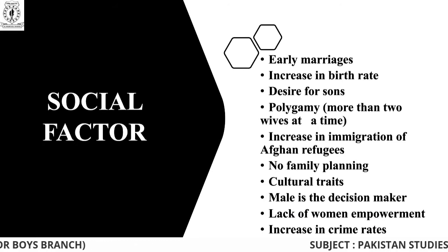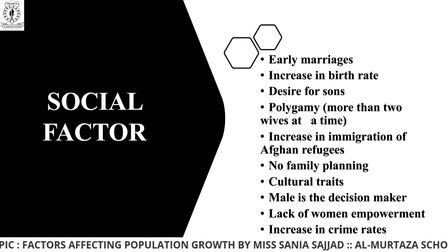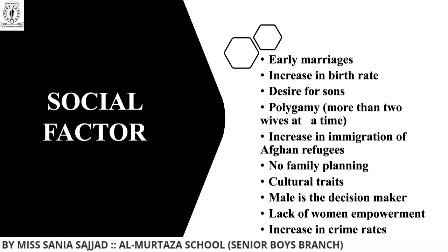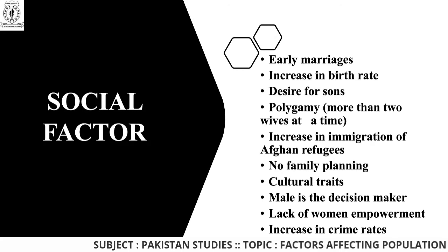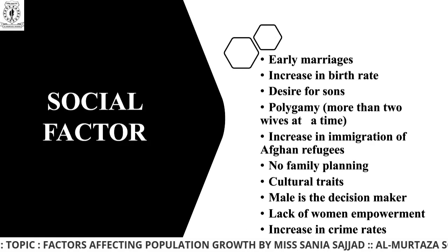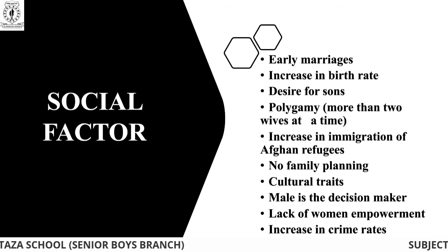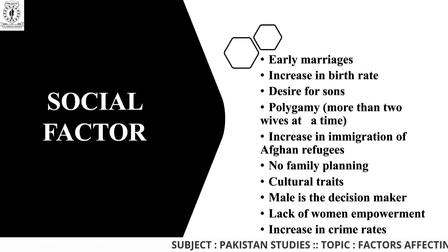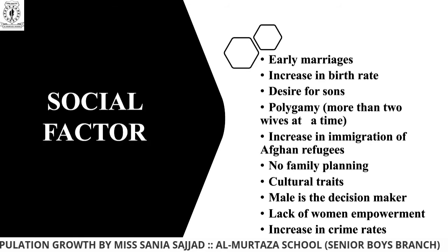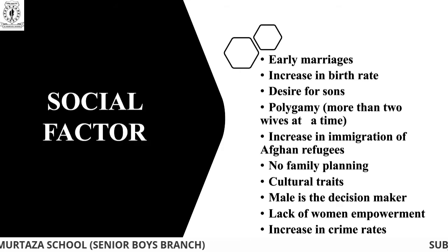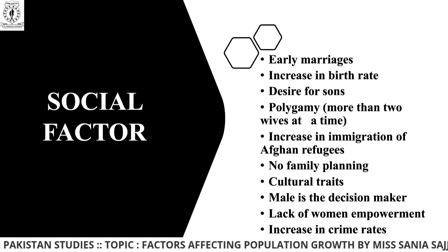Lack of women empowerment: still there are villages where women are not getting freedom to study, and there are families in cities who don't prefer women to study. Their concept is that women have to get married and go to another house, so instead of investing in education it is better to teach household skills and save money for marriage materials. The last social factor mentioned is increase in crime rates — when you don't have enough money to feed your family, crime rates expand.